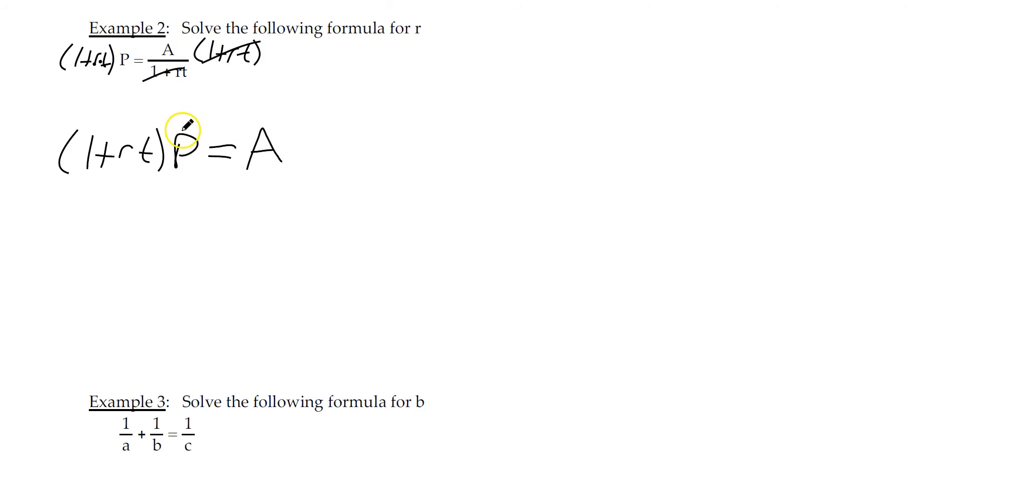Clear fractions. Distribute through parentheses. That'll be P plus P little r little t equals A. Trying to solve for r. There it is. Let's move this P to the other side, because it doesn't have what we're after.